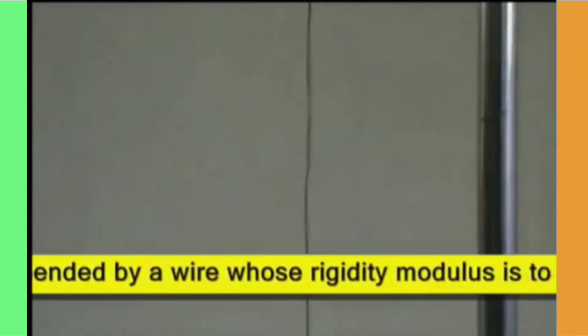A torsional pendulum consists of a uniform metal disc suspended by a wire whose rigidity modulus is to be determined.